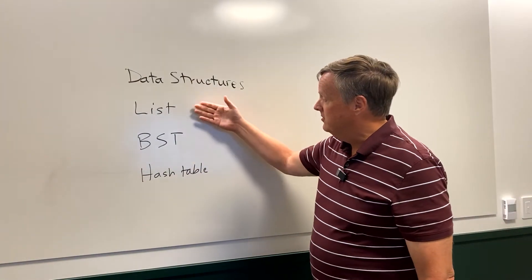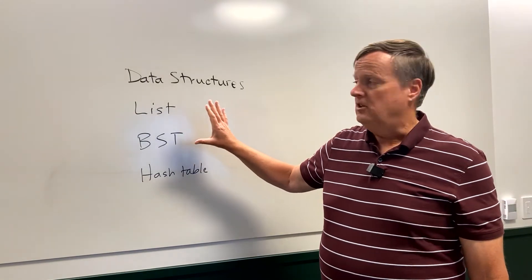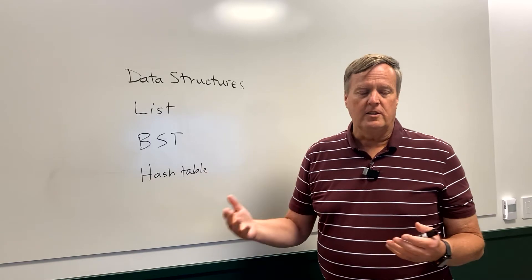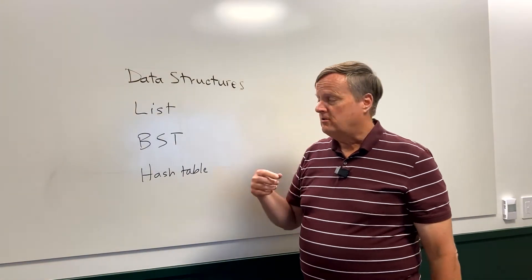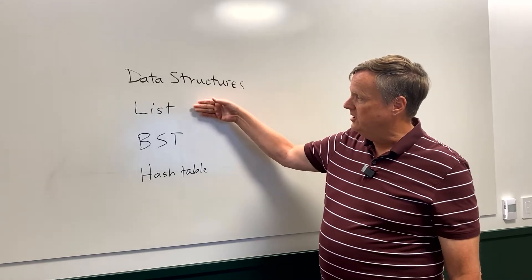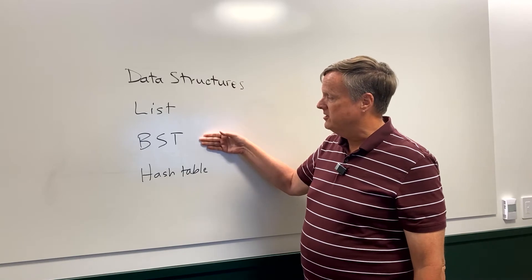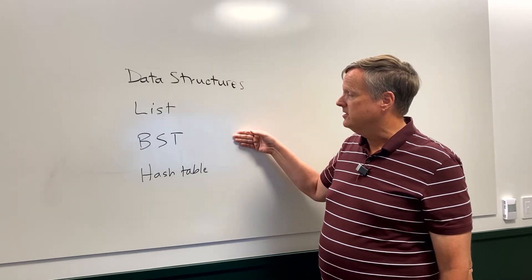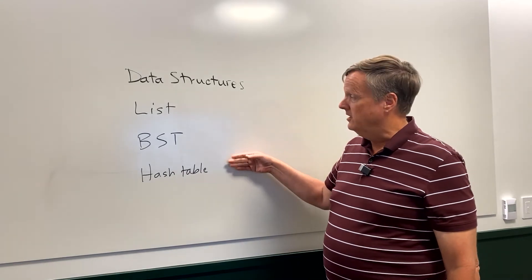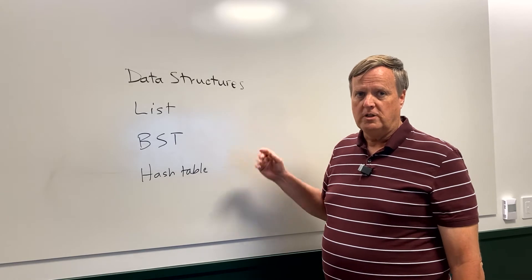I have videos later in the series that cover each of these in more detail, going through their various operations. You'll need to learn these three data structures very well. Once you have that knowledge, when you're given a problem you just go through each one: can I use a list? If yes, I know most operations are linear — so I do my analysis. If that doesn't work or they want something faster, try the binary search tree — that's logarithmic. Then try the hash table. You cycle through each of the three and figure out which one applies to the problem they're asking.